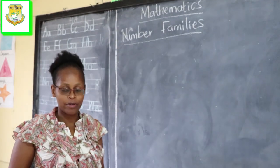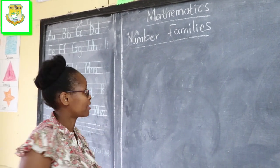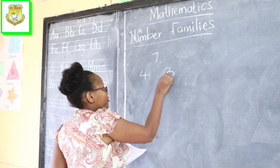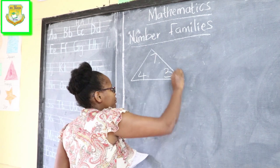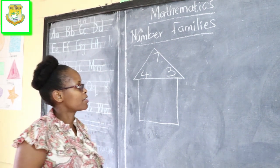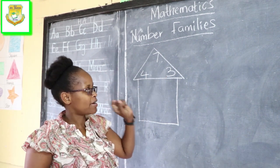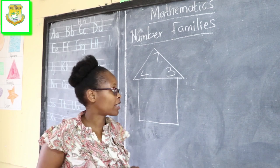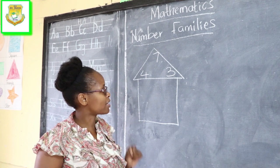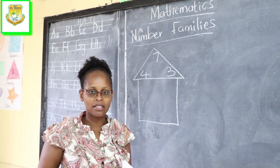Number families — we have numbers that are related, and that's why I call them number families. Now there is no calculation in a number family; we cannot calculate anything. But we are going to use the same numbers to form a number family by using the addition sign and the take away sign.